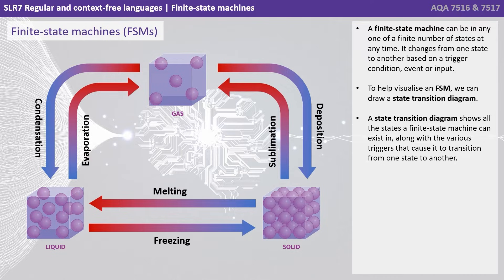To help visualize a finite state machine we can draw what's called a state transition diagram. A state transition diagram shows all the states a finite state machine can exist in, along with the various triggers that cause it to transition from one state to another.